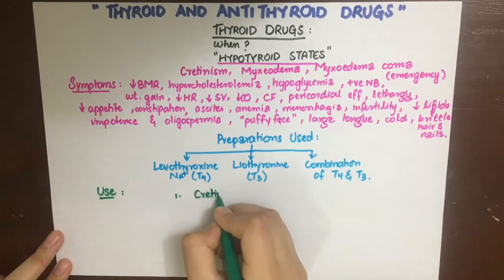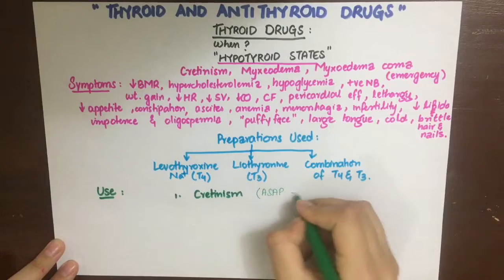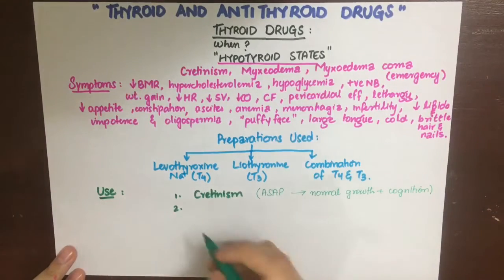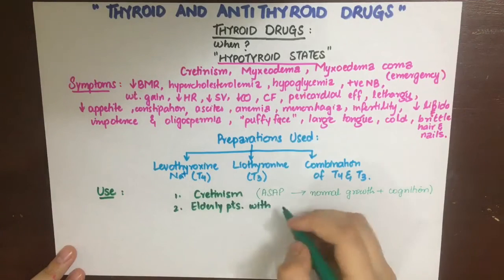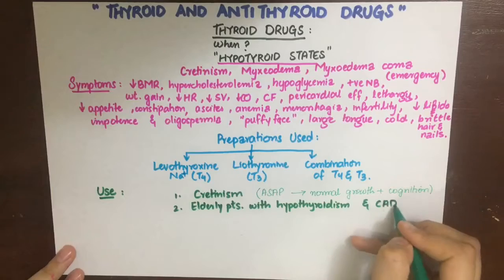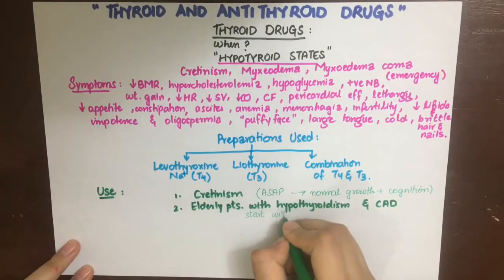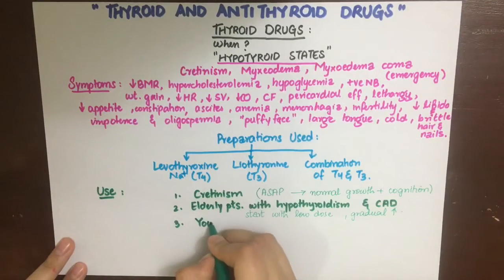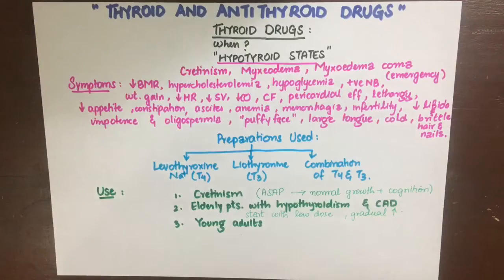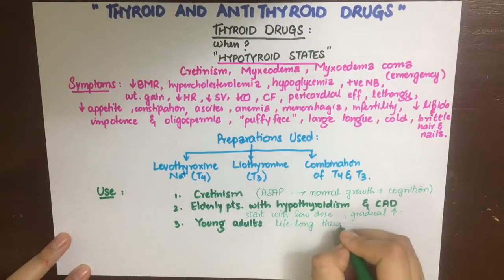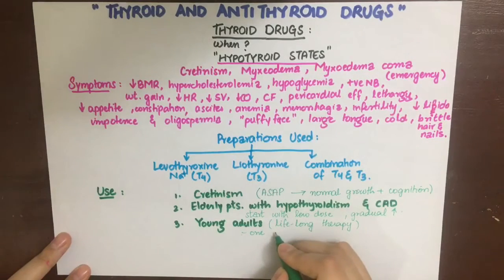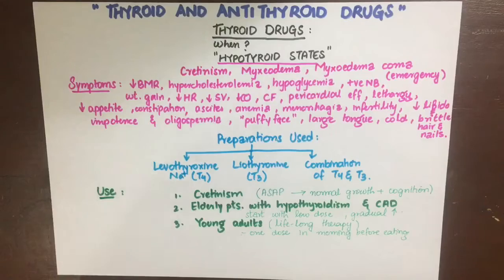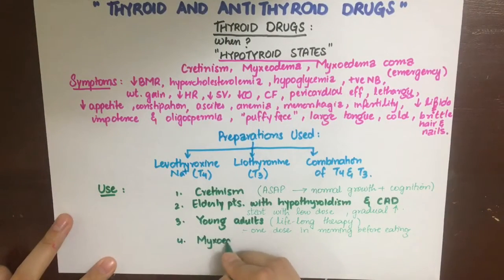The uses of these drugs include cretinism and myxedema. Cretinism is hypothyroidism in children or infants, so therapy should be started as soon as possible to ensure normal growth and cognition since brain development is occurring. In elderly patients and those with coronary artery disease, treatment should start with a low dose first — as it can cause MI — and then the dose should be gradually increased. In young adults with hypothyroidism, full replacement therapy should be given as a single dose in the morning on an empty stomach, with lifelong therapy. Myxedema coma is a medical emergency characterized by hypothermia, bradycardia, pleural effusion, pericardial effusion, and coma.